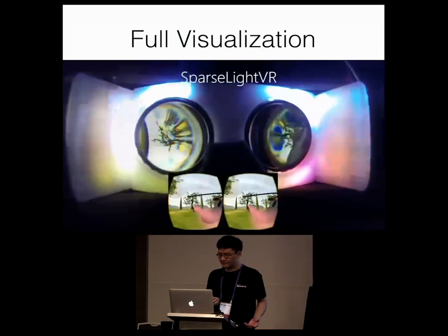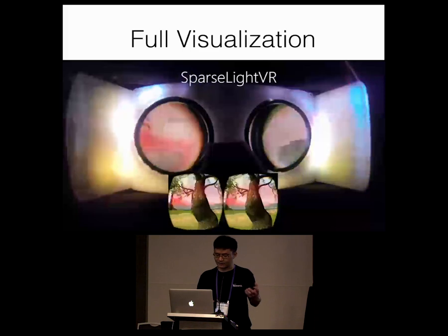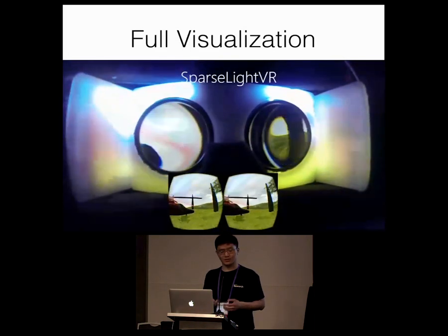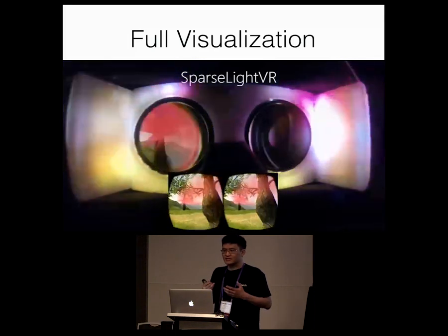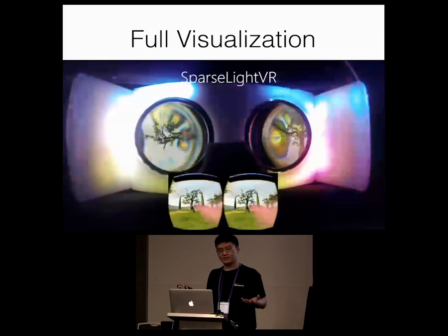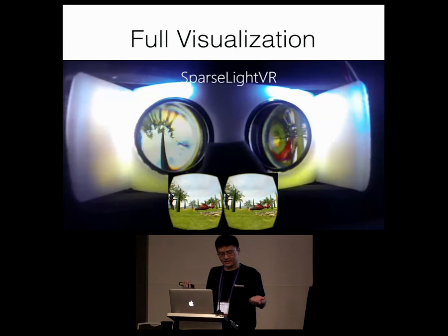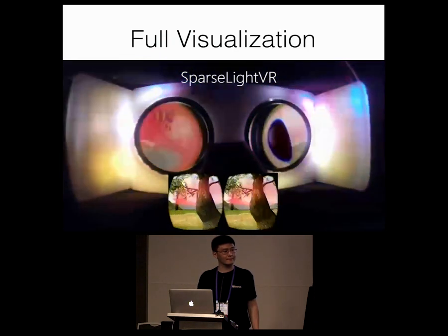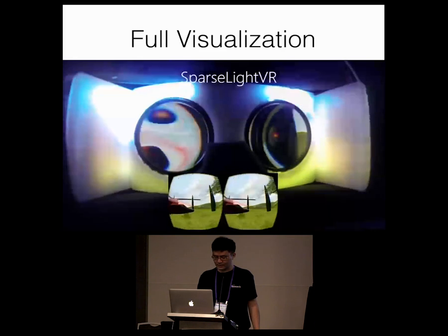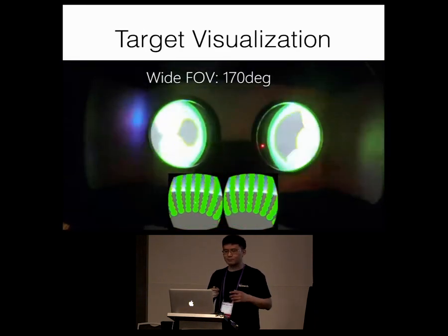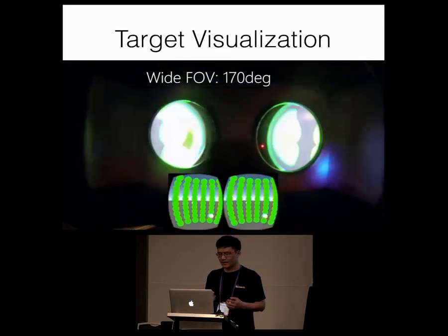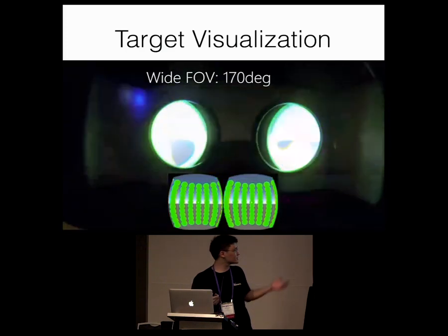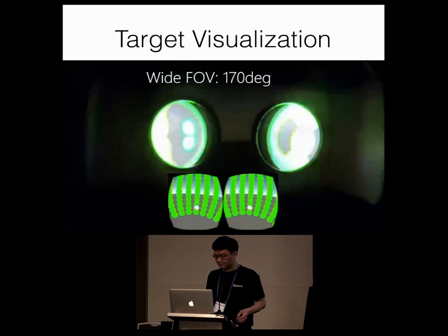With the sparse periphery, we can render content independently of the main display. We came up with three different visualizations. First, a designer can simply render the full environment to the periphery, useful for providing extra context, treating it as an extension of the main display. Second, the sparse periphery can be used to render only particular objects of interest in the manner of a heads-up display — for example, rendering a white target into the periphery in one of our study tasks.